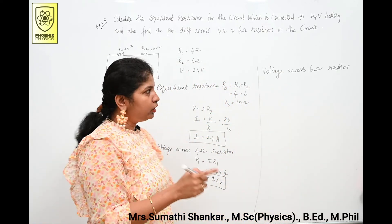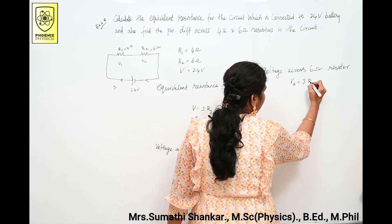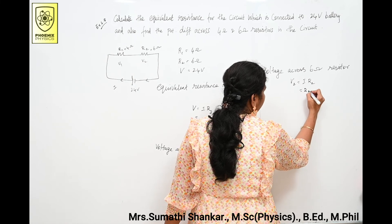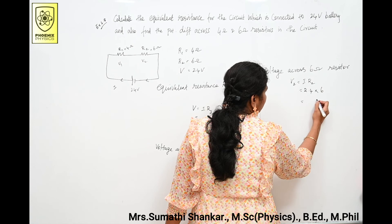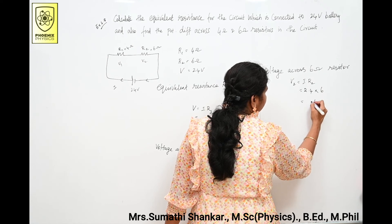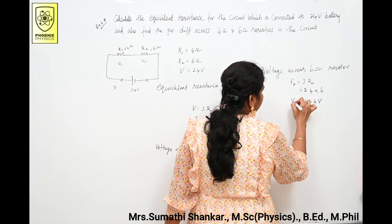we are going to calculate voltage across 6 ohm resistor. So V2 is equal to I into R2. I is 2.4 into R2 is 6. Multiply these two, so 14.4 volt. This is V2 value.